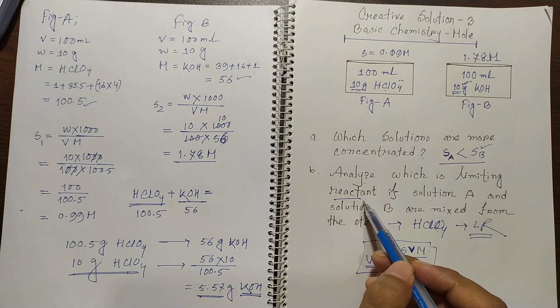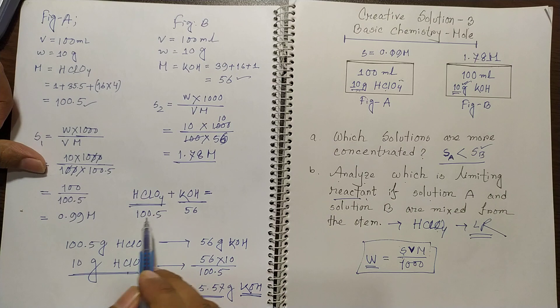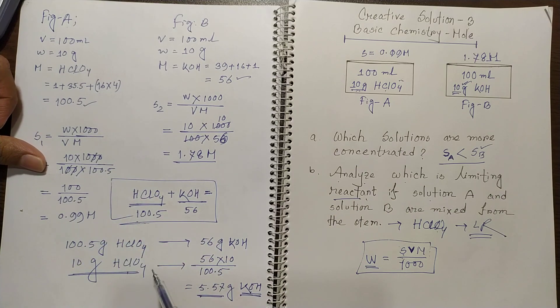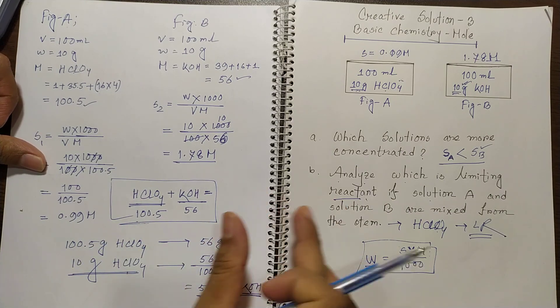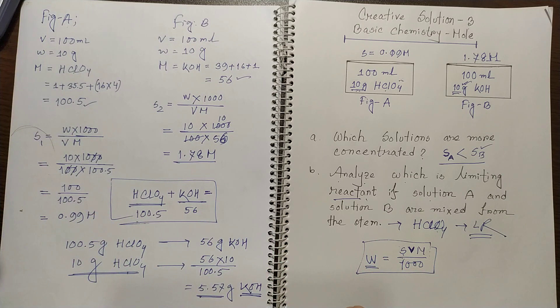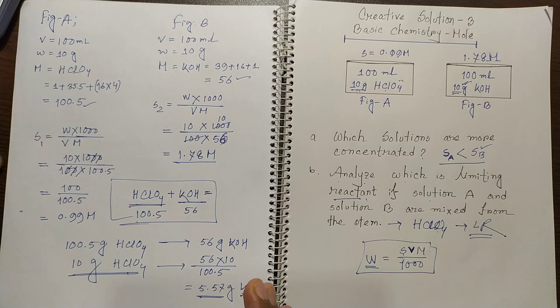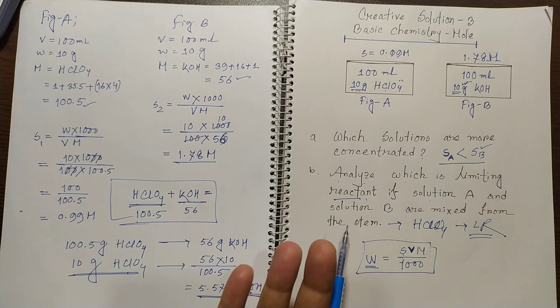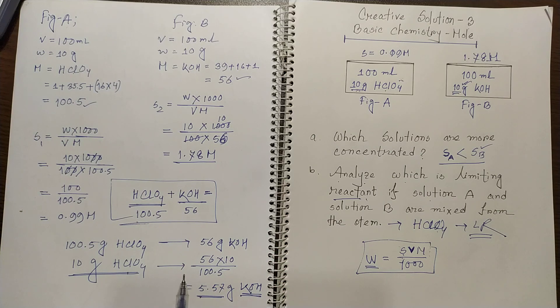And in case of understanding the limiting reactant we must know the reaction first. And we didn't think about the product, I just think about the limiting reactant because this is the concept. So I hope you understand. In the next video I'm coming up with another problem solution of this chapter. Stay tuned with me and let me know what is the demand. Thank you so very much. See you in the next class.